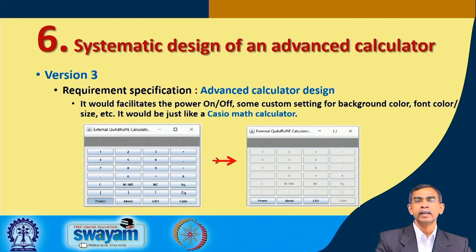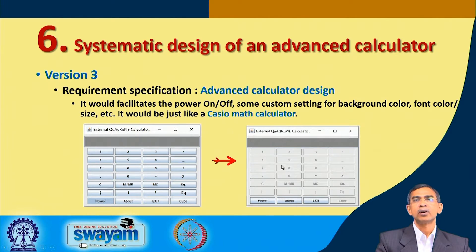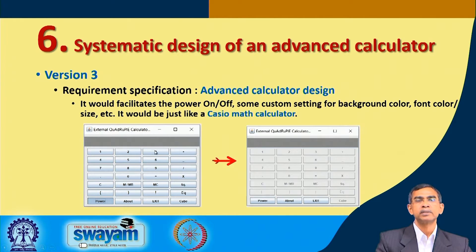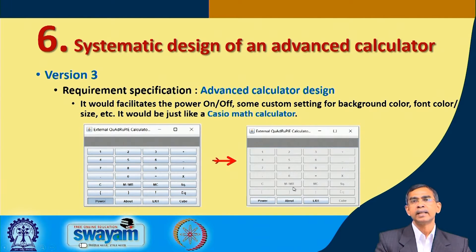Let us see what advanced components we are thinking about. A power button is considered — if we click the power button, all things will be dimmed with no highlights, meaning the calculator appears powered off. So it is a power on and off feature. After certain setting changes, if anyone uses any keys while the calculator is powered off, it will not work and becomes disabled.